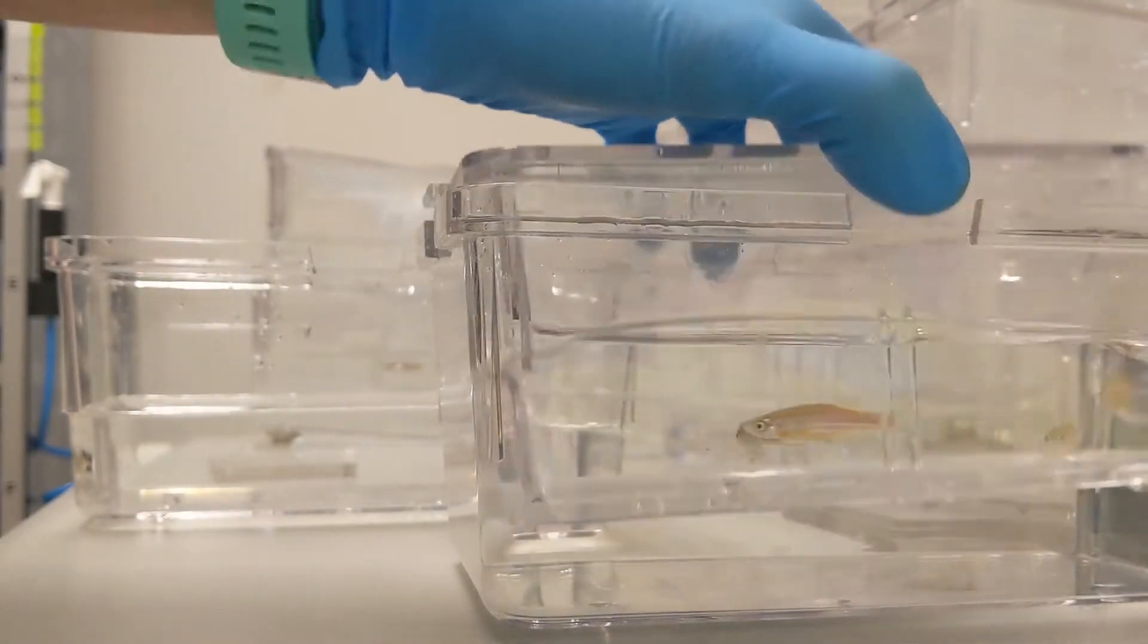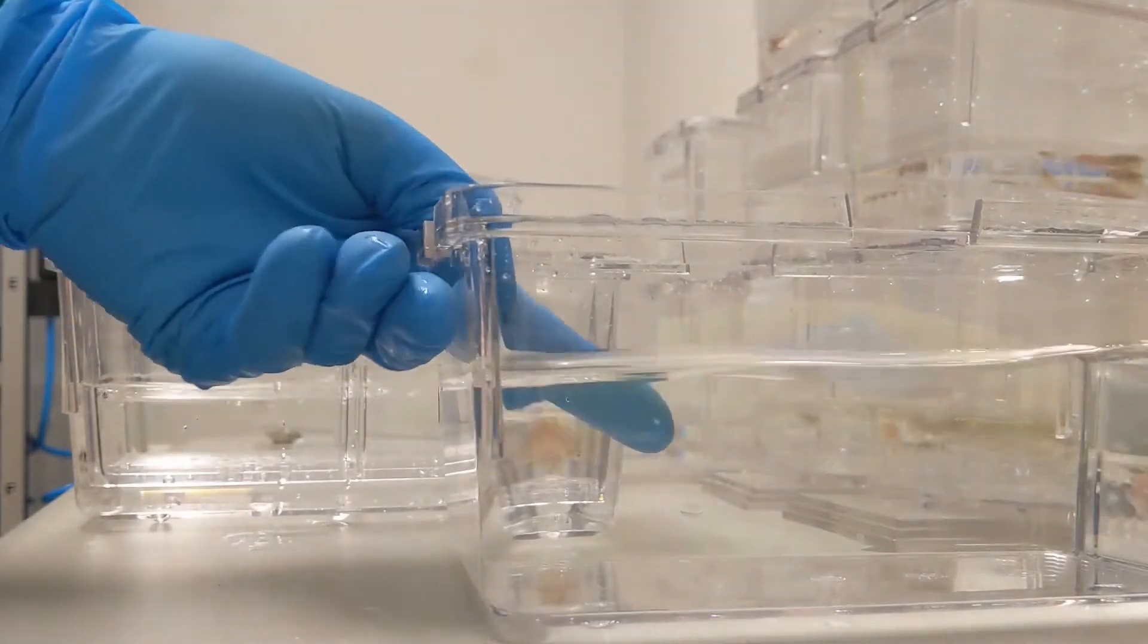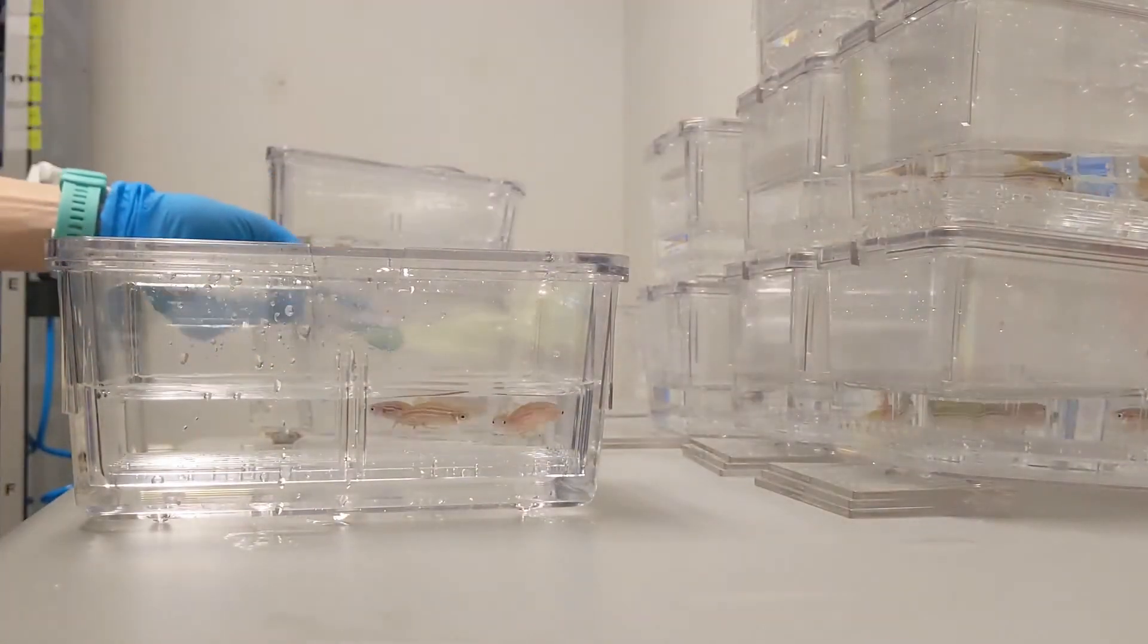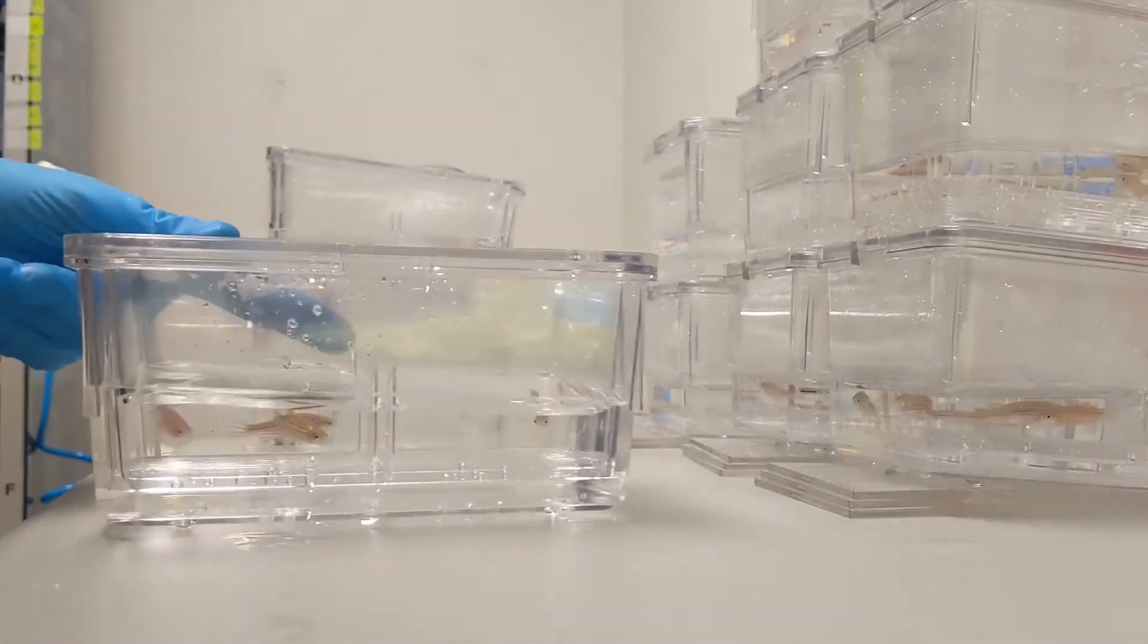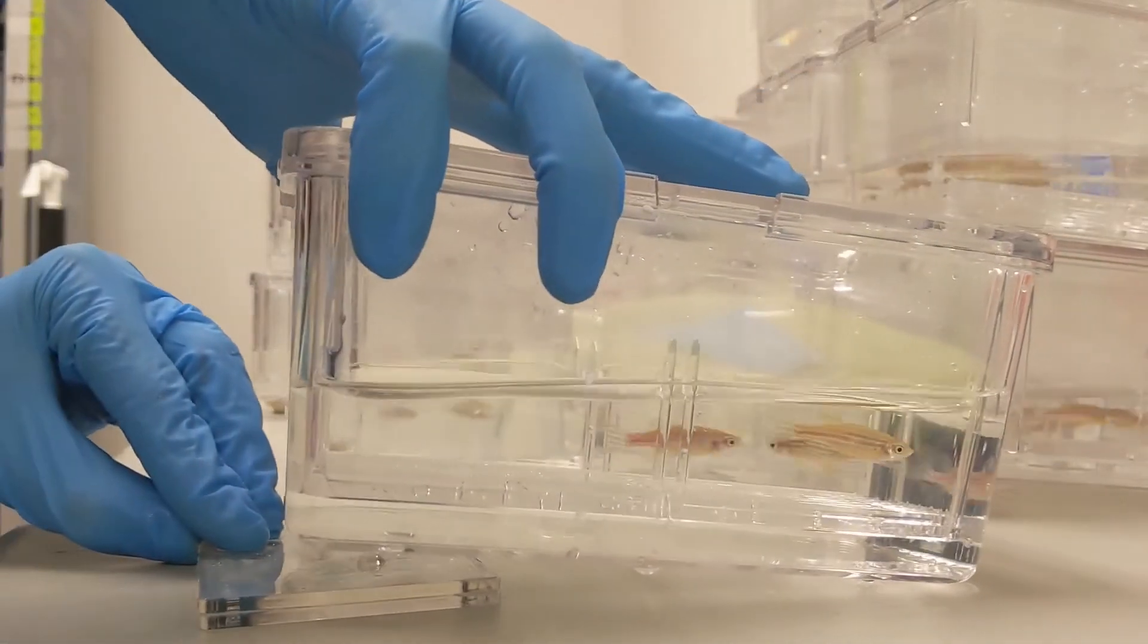The following day, we pull the dividers and move them to a lower volume of water and put them at an angle to simulate a slope in their natural environment. This can entice them to breed more than being on a flat surface.